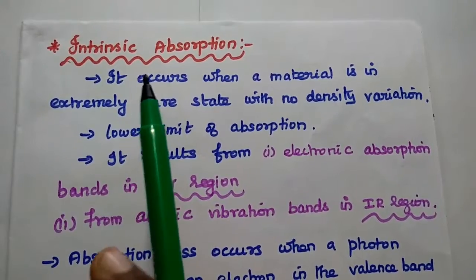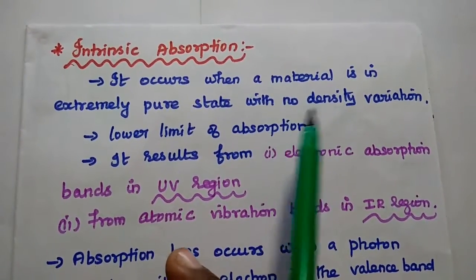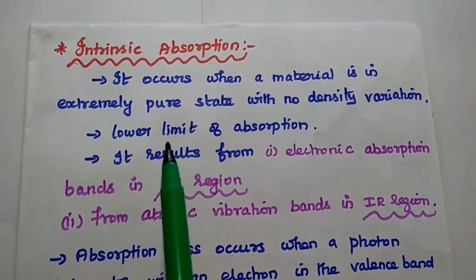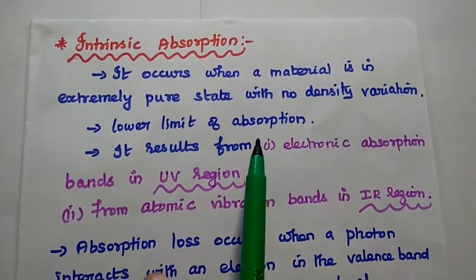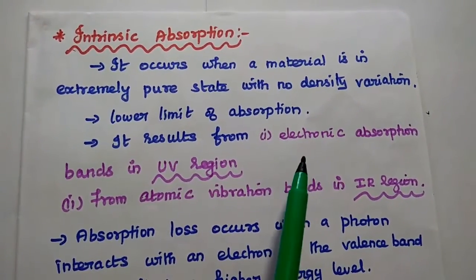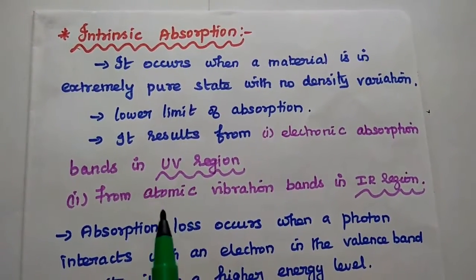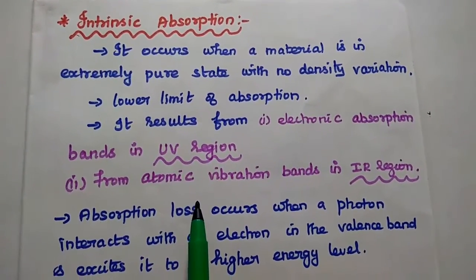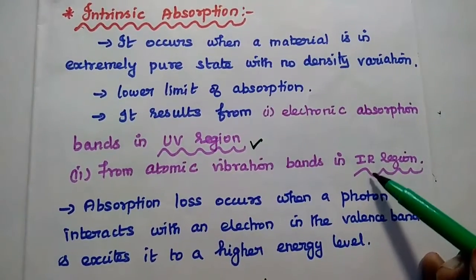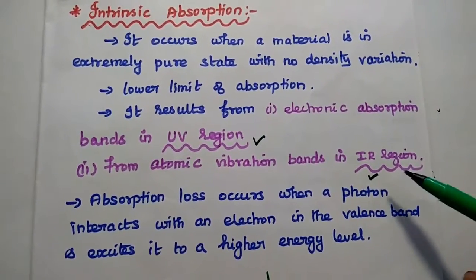Intrinsic represents extremely pure state of the material with no density variation. Intrinsic absorption is the lower limit of absorption. This intrinsic absorption results from the electronic absorption bands in the UV range and from the atomic vibration bands in the IR range. These two are very important factors caused for intrinsic absorption.